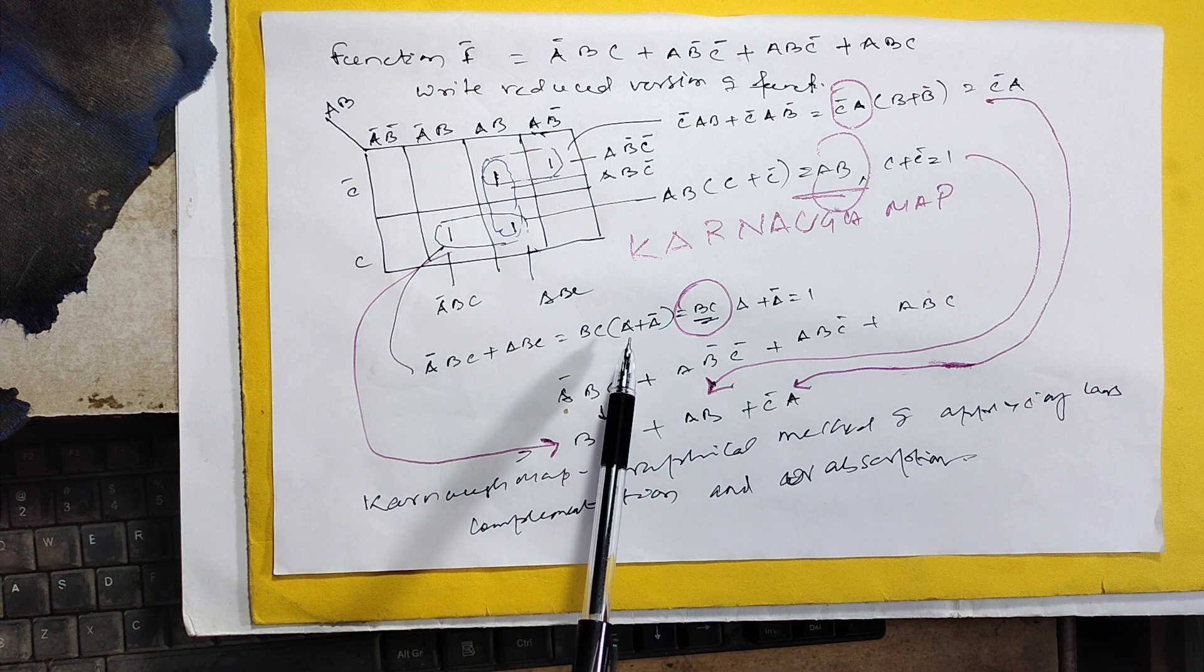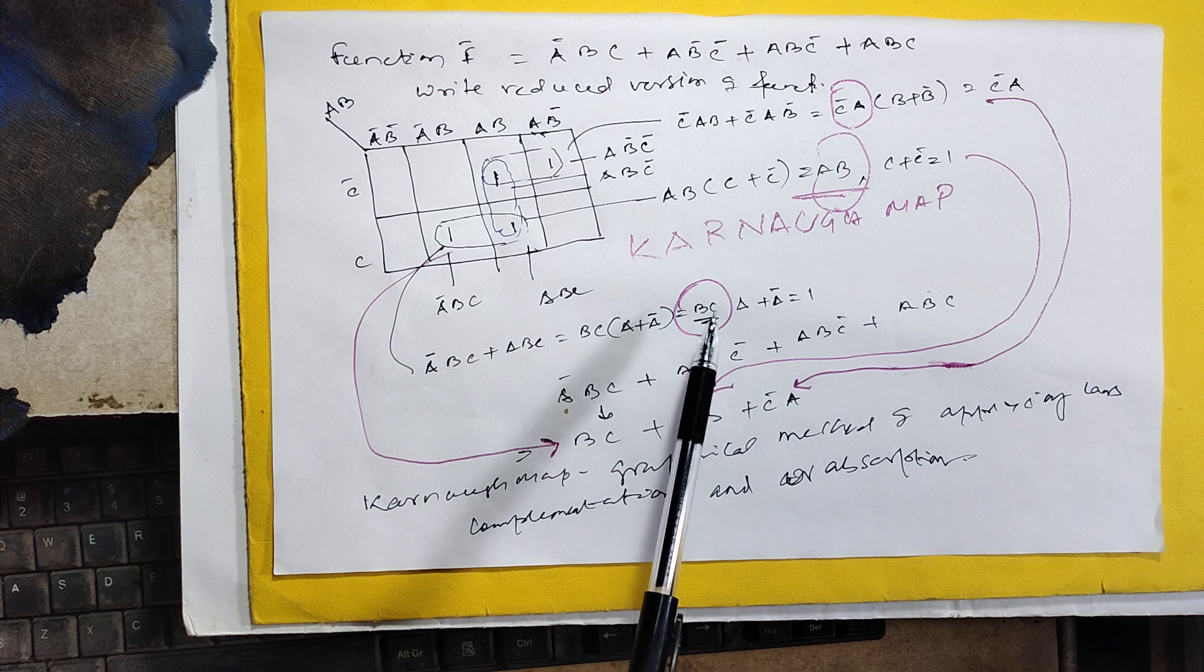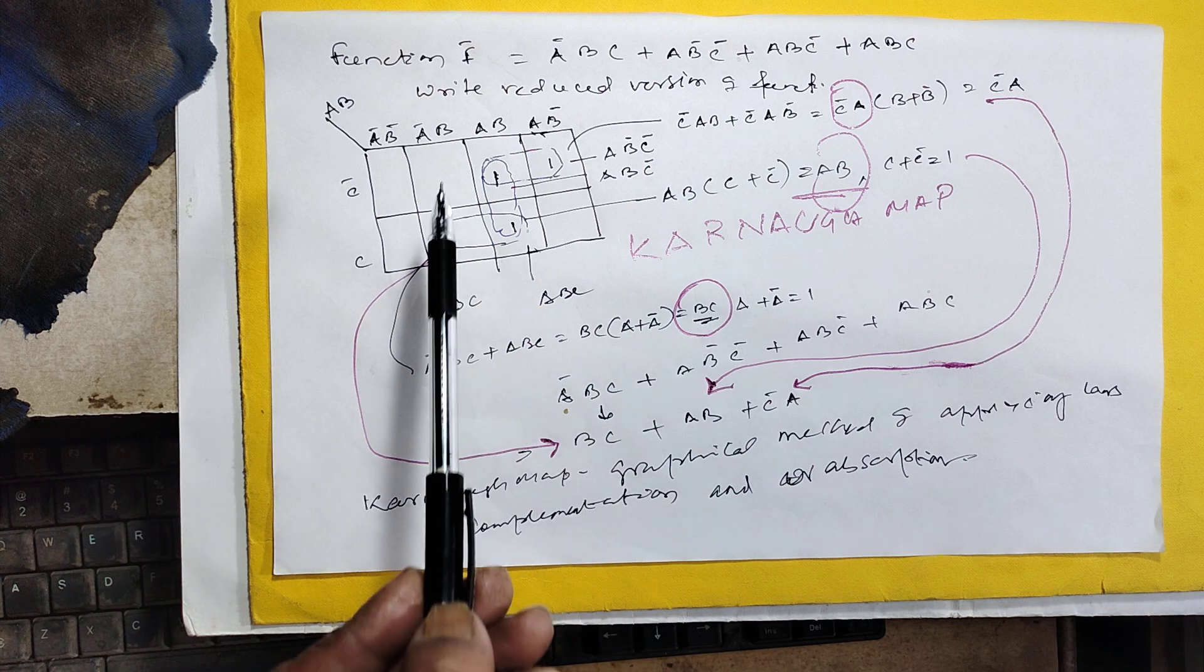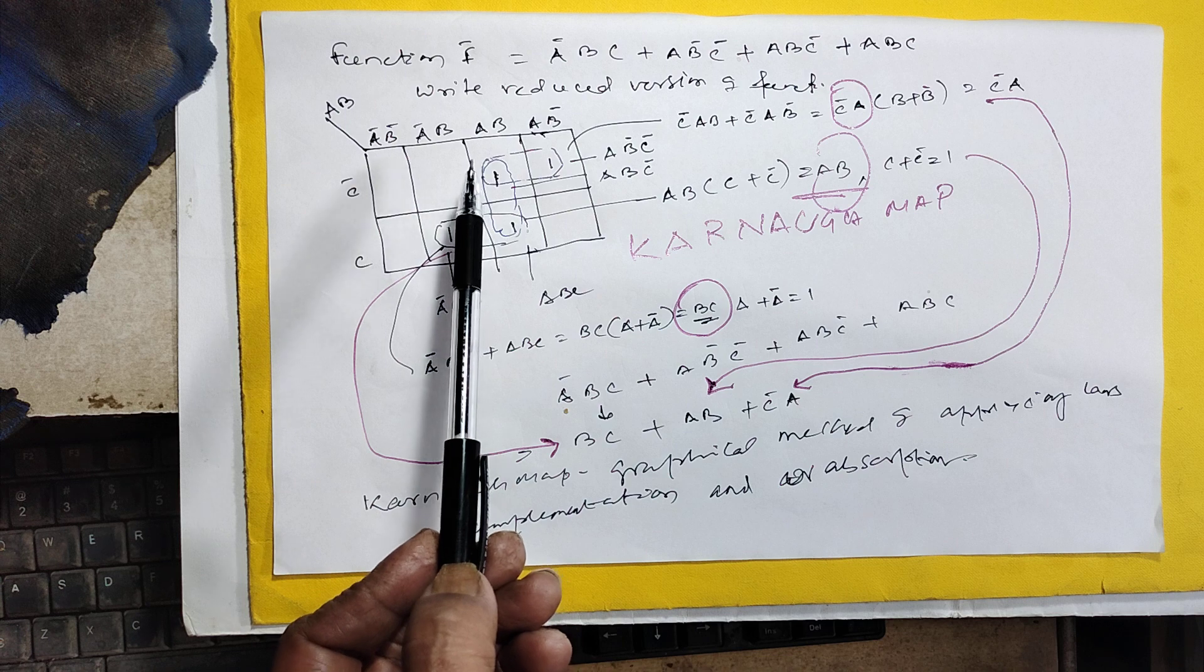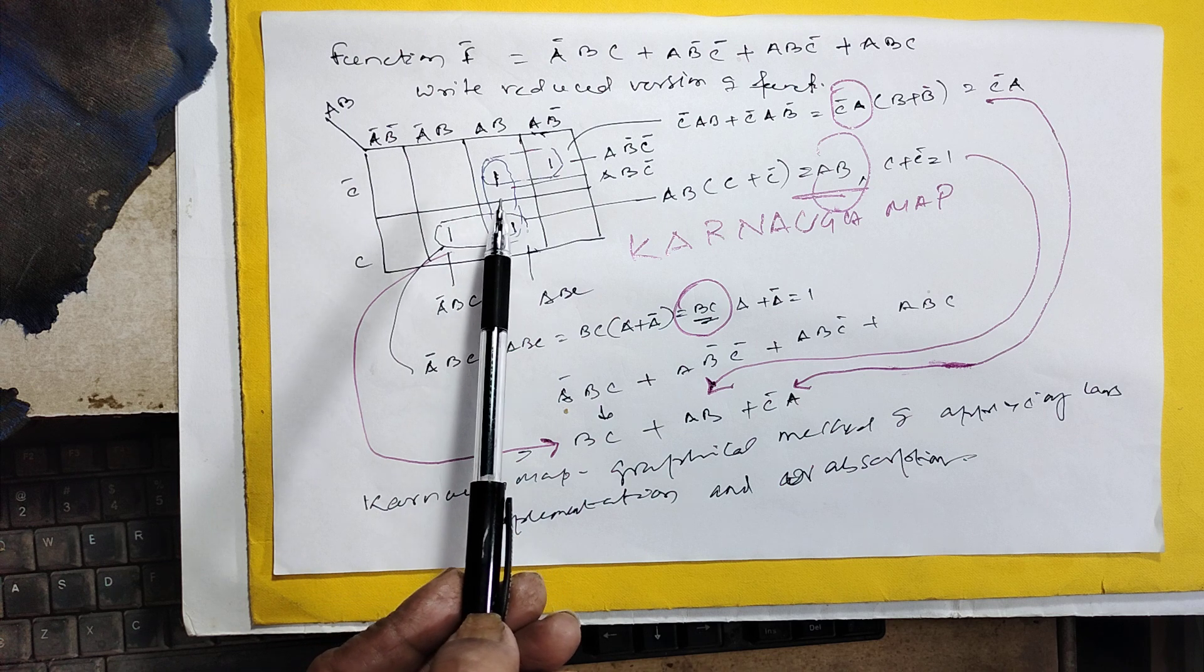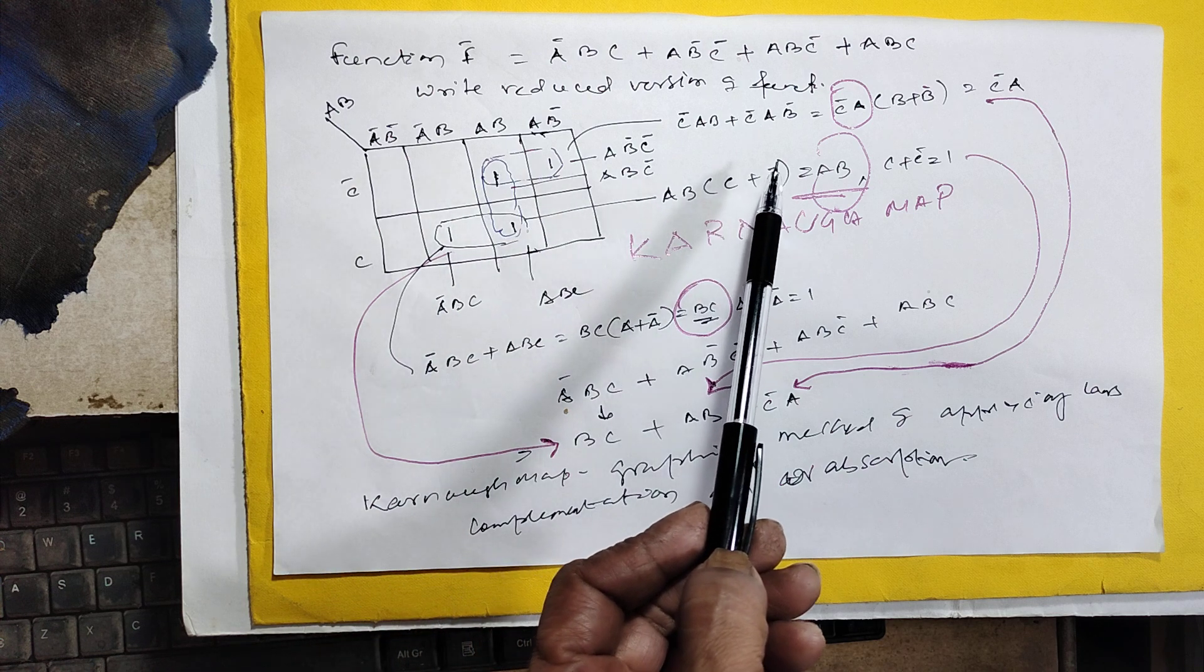Here ab: abc' plus abc. Taking ab common, c plus c' equals 1, so this is ab.